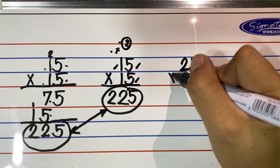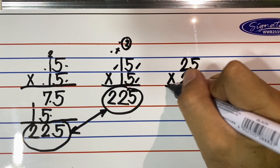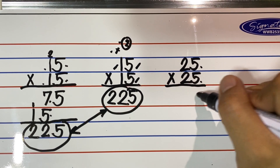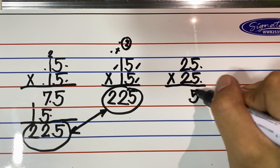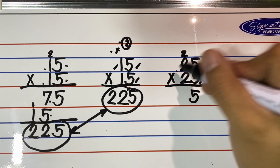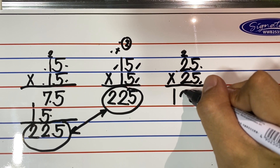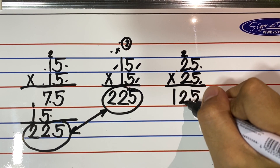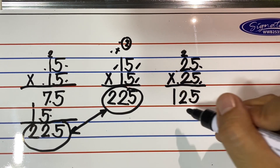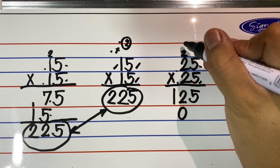Let's try 25 times 25. For the long method: 5 times 5 is 25 — write the partial product below the equal sign, write 5 and carry 2. Next, 5 times 2 is 10, plus 2 equals 12. The partial product is 125.